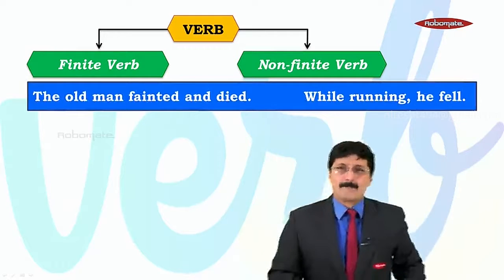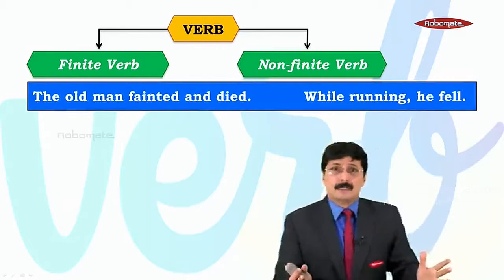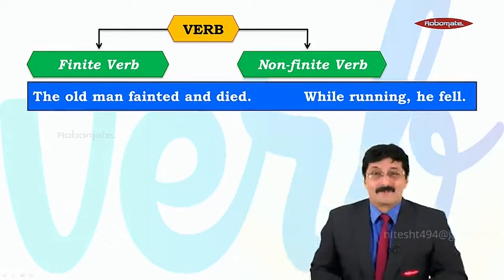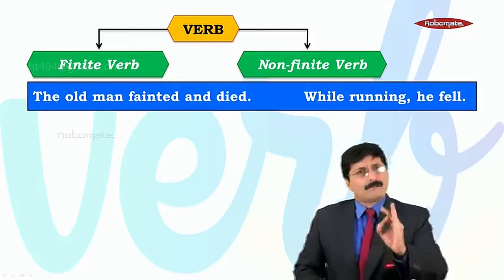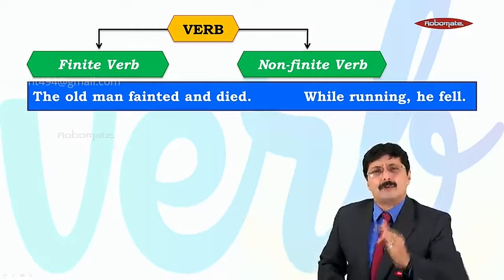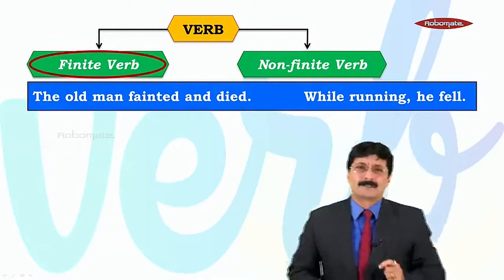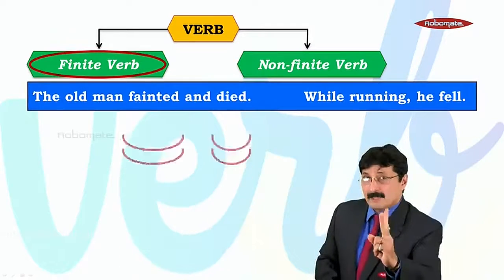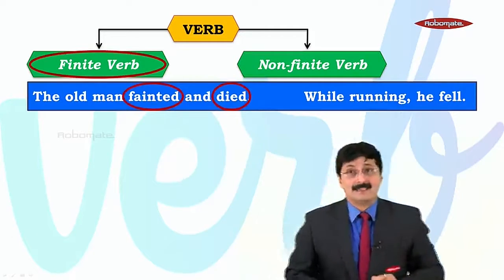Now let's look at these two examples. The old man fainted and died. While running, he fell. In 'The old man fainted and died', we are trying to find out the finite verbs in this sentence. There are two verbs: fainted and died.